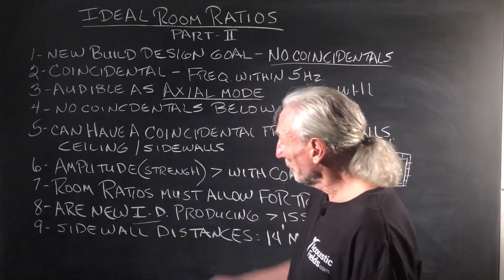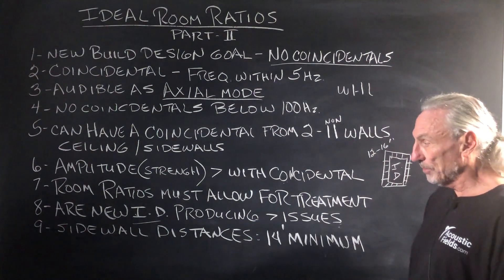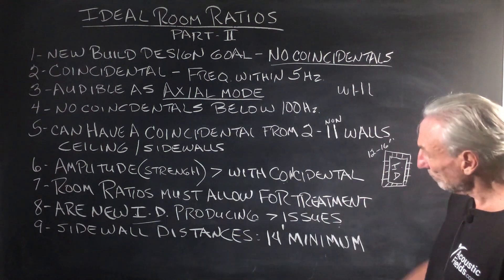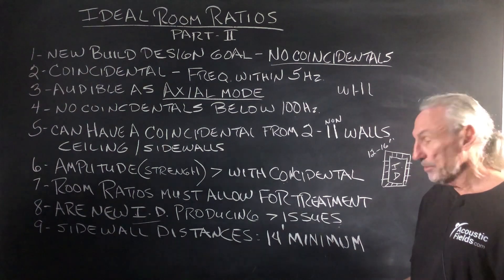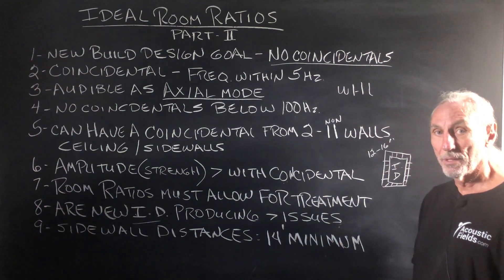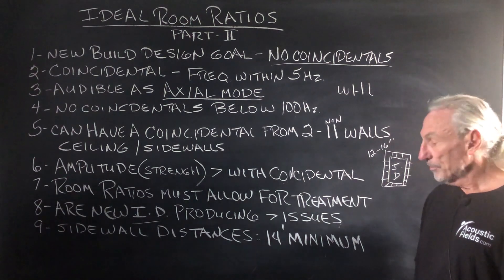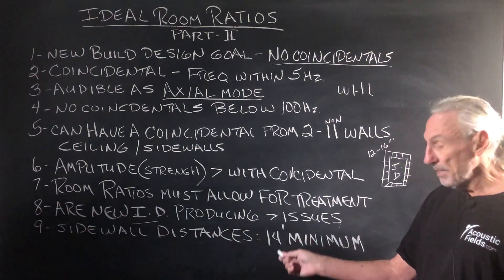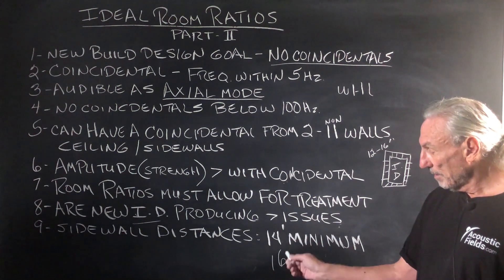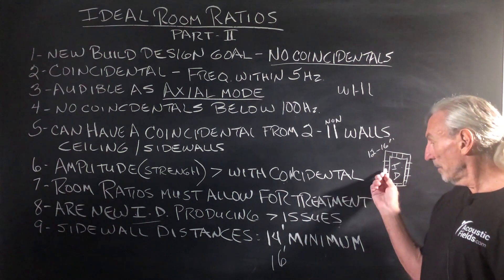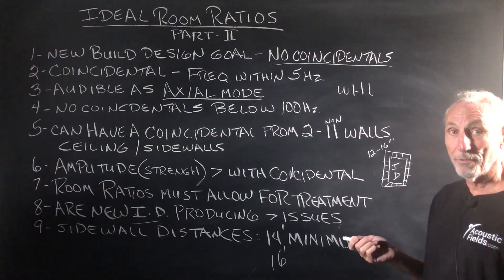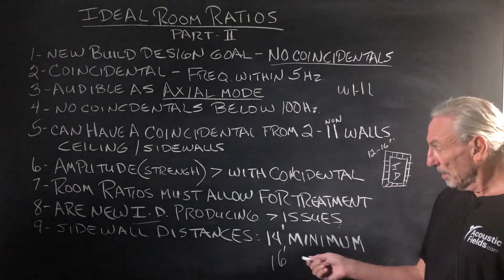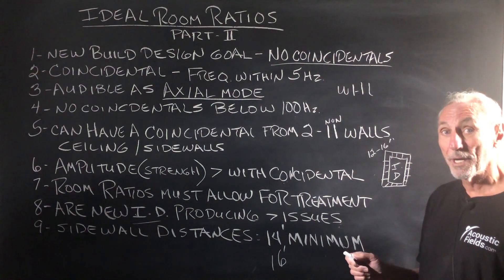The new internal dimensions can produce issues — make sure that calculation is in there. For sidewall distances on a two-channel rig, we want those distances to be equal. We don't like less than 14 feet for sidewalls. So in your existing or new builds, if we're going to net 14 feet, what do we need before treatment? We need 16 feet, because treatment is going to take 12 inches on each side minimum. If you want to go down to 30 cycles, we've got to give up 32 inches on a width dimension. All of this has to be calculated and designed for.